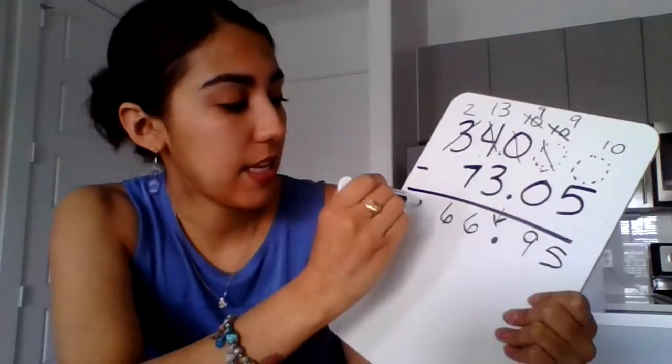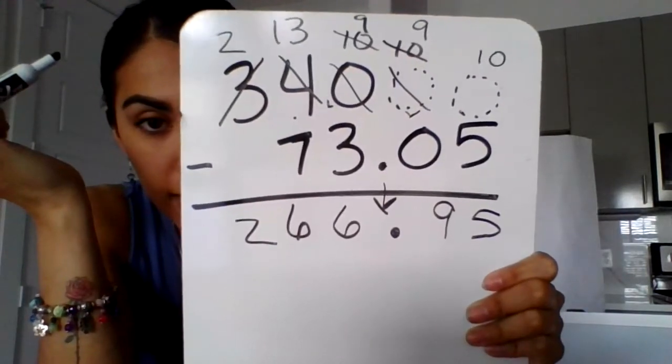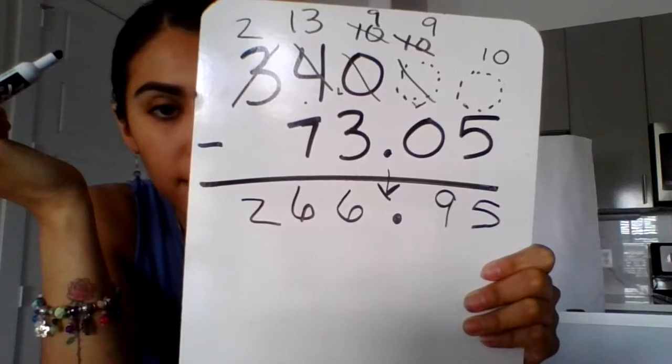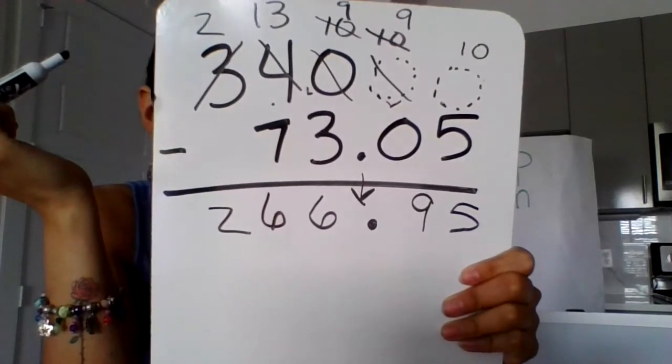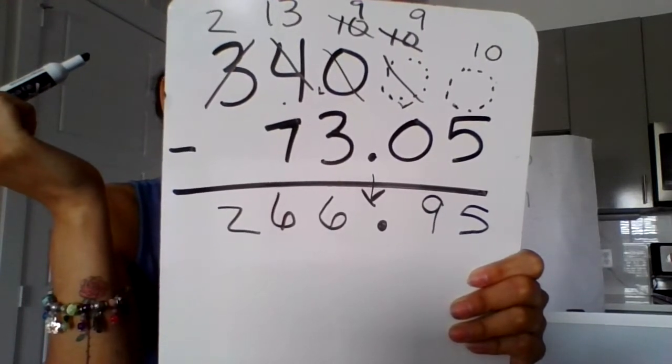Your final answer for the strip diagram, solve, and label is 266.95. Wonderful. All right, boys and girls,